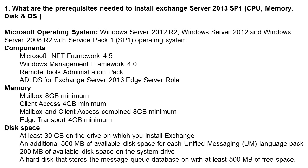Disk Space requirements: At least 30 GB on the drive on which you install Exchange. An additional 500 MB of available disk space for each Unified Messaging (UM) language pack. 200 MB of available disk space on the system drive that stores the message queue database, with at least 500 MB of free space.